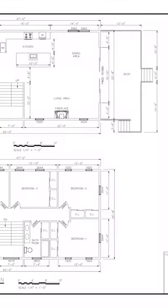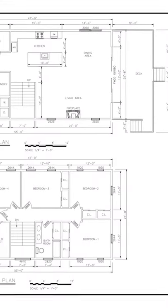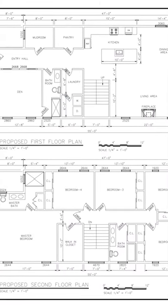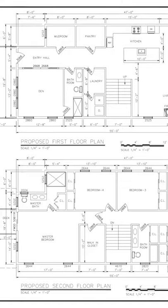For residential plans, common scales you'll see are a quarter of an inch equals a foot. So for every quarter inch on the paper, that equals a foot in real life.